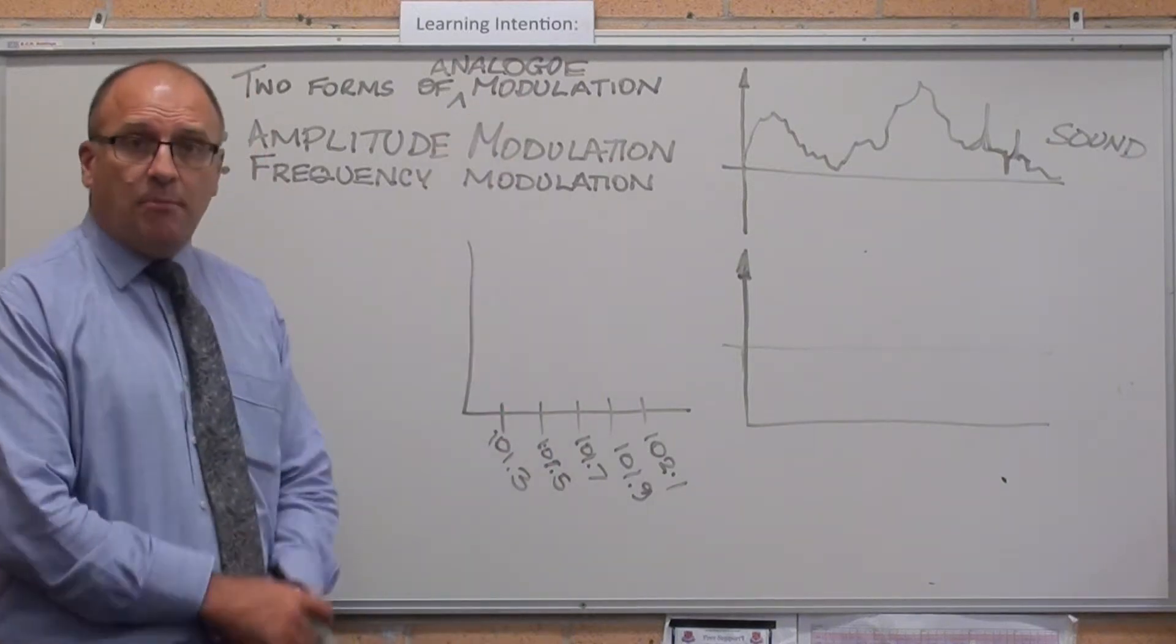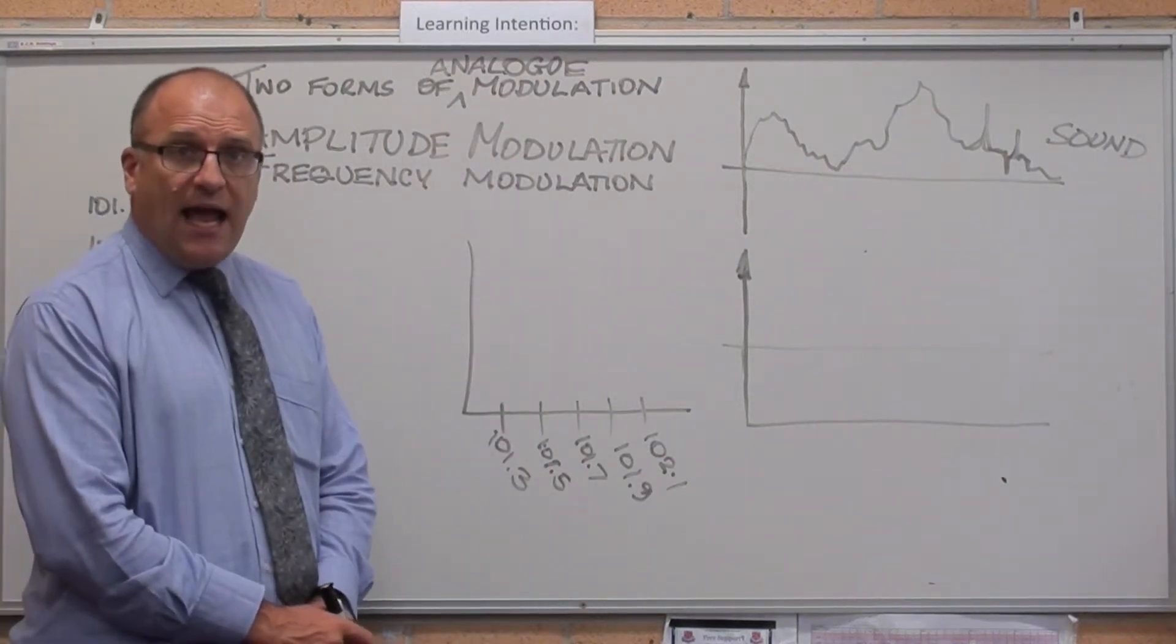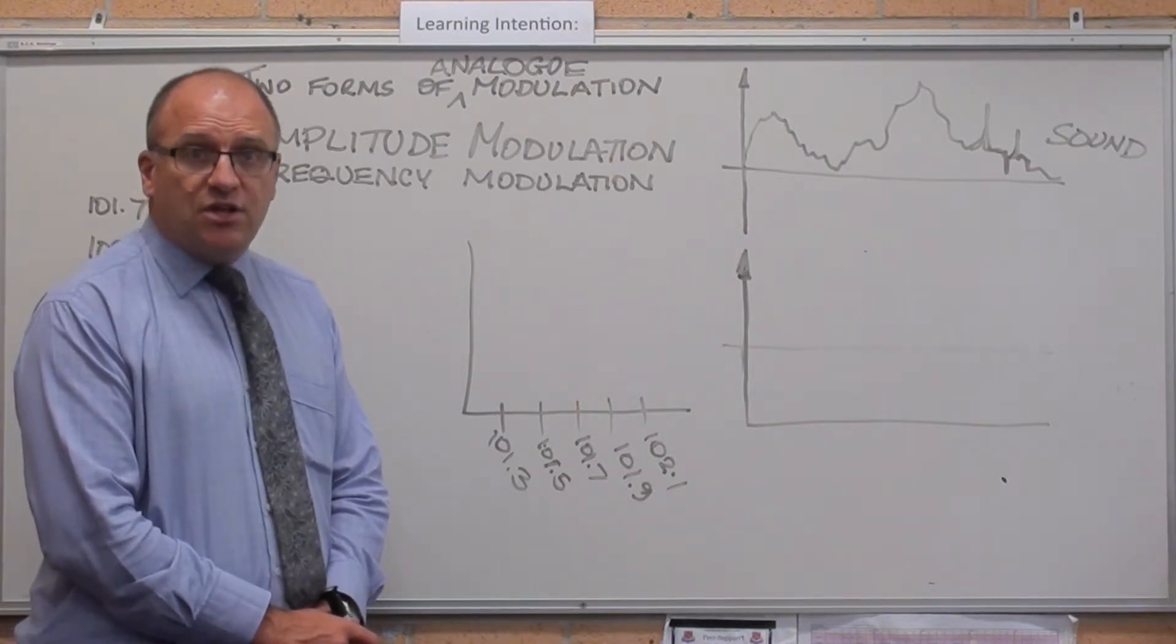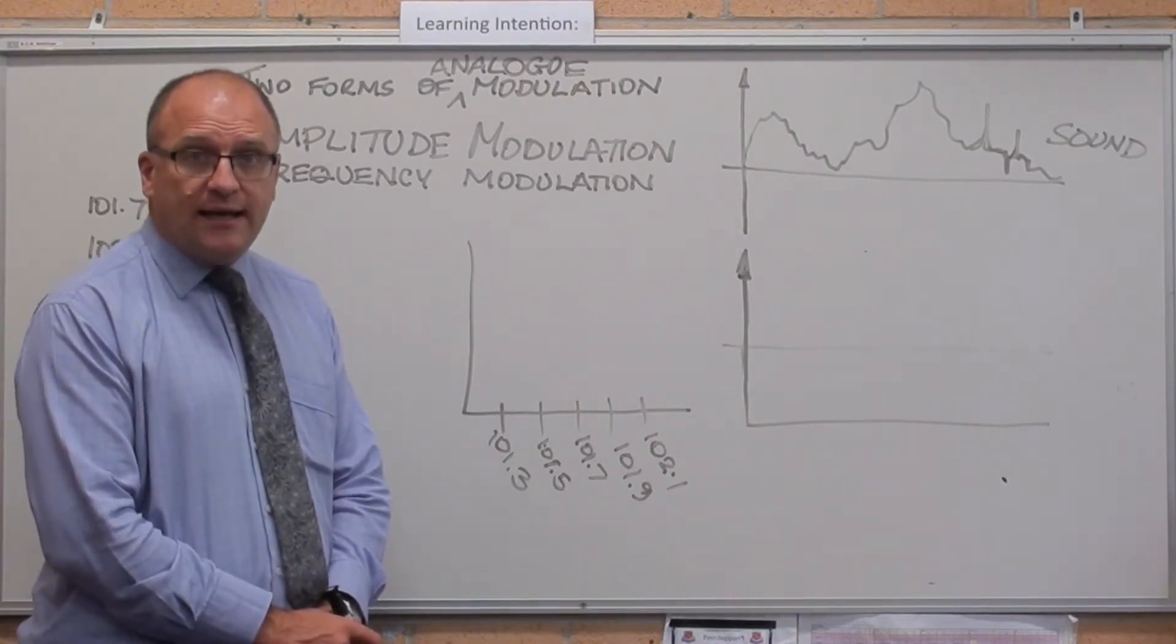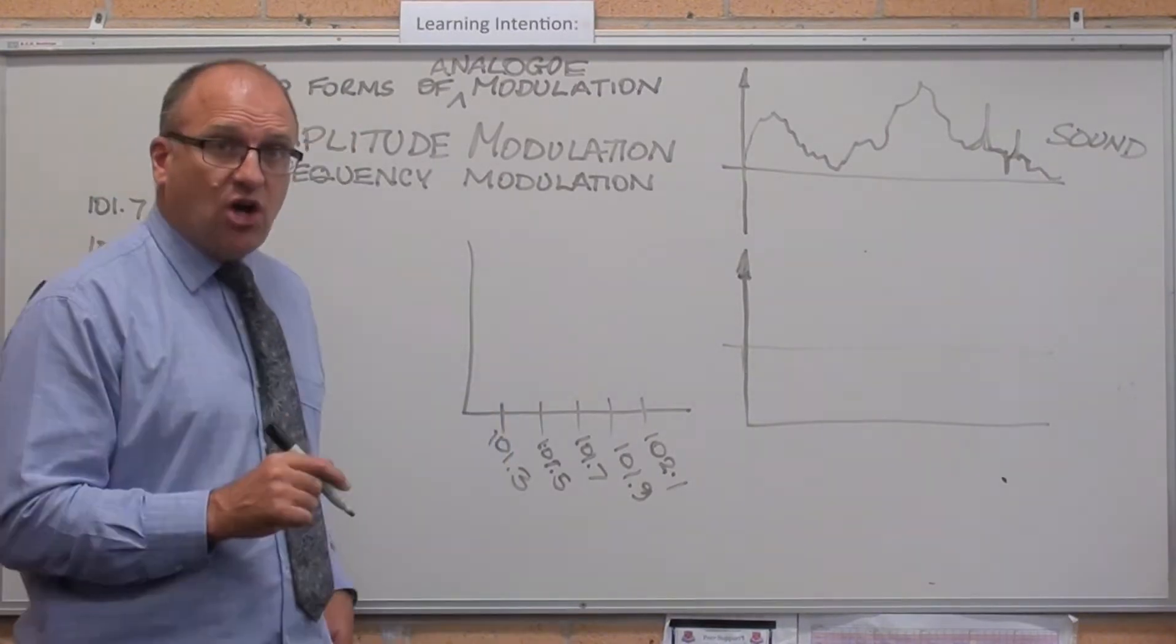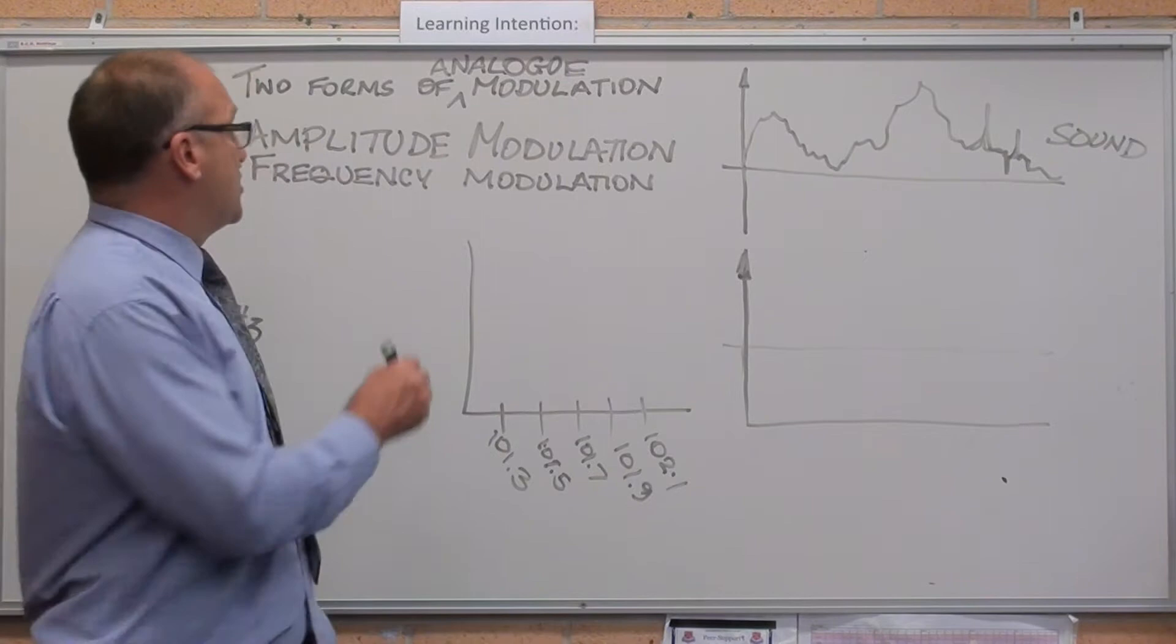There's two forms of analog radio modulation used in Australia. Amplitude modulation, where the amplitude of the radio wave is modulated, and frequency modulation, where the amplitude stays constant but the frequency changes.